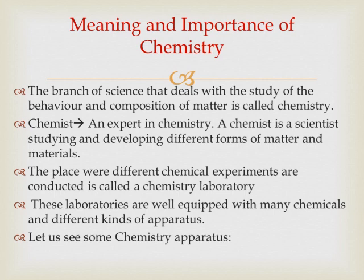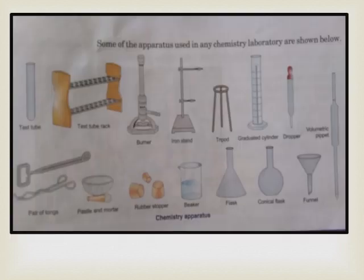Let us see some chemistry apparatus generally used. The first one is a test tube, which is very frequently used. A test tube rack holds the test tubes in those holes you can see. A burner works with the help of gas and flame burns on top, and we can heat any chemical using it.